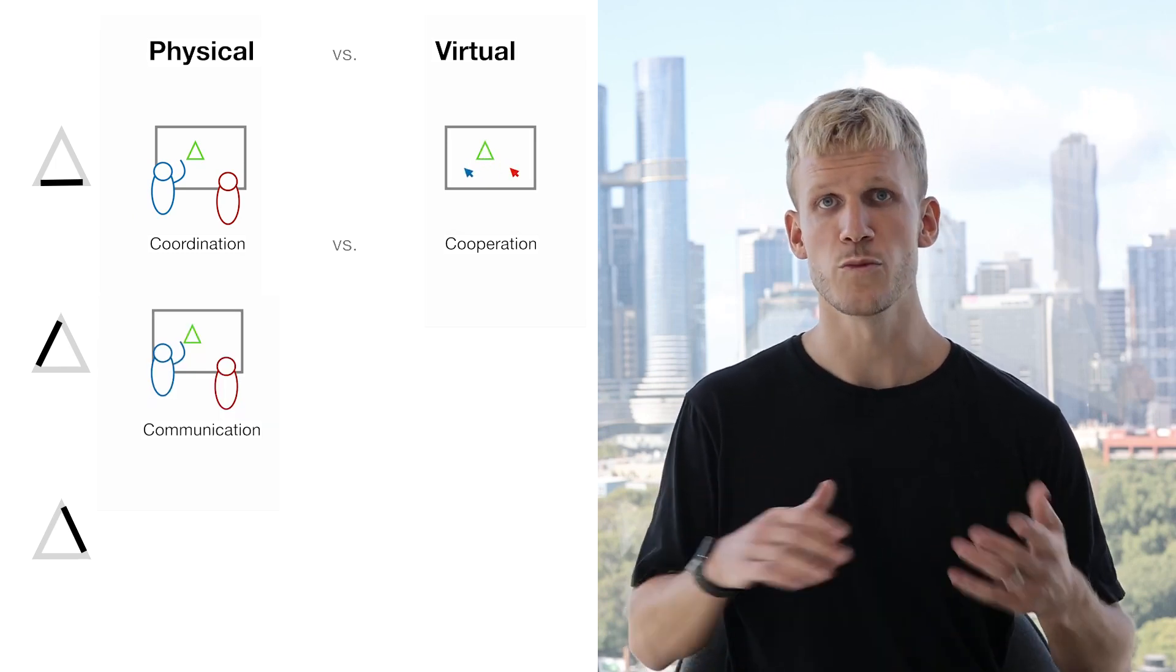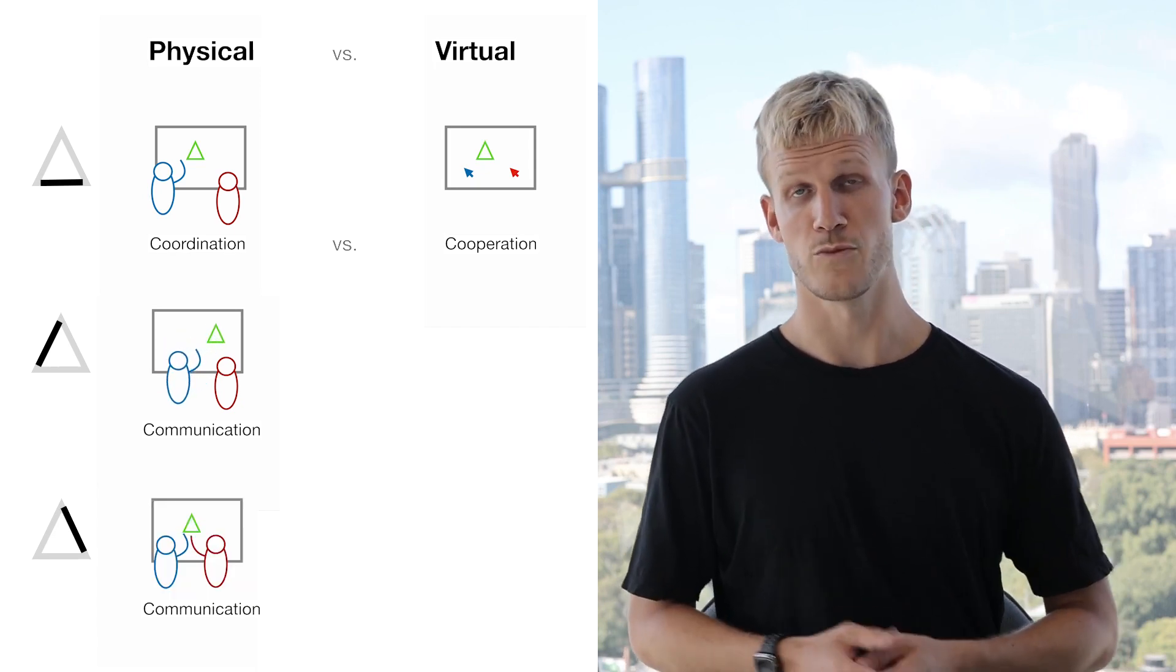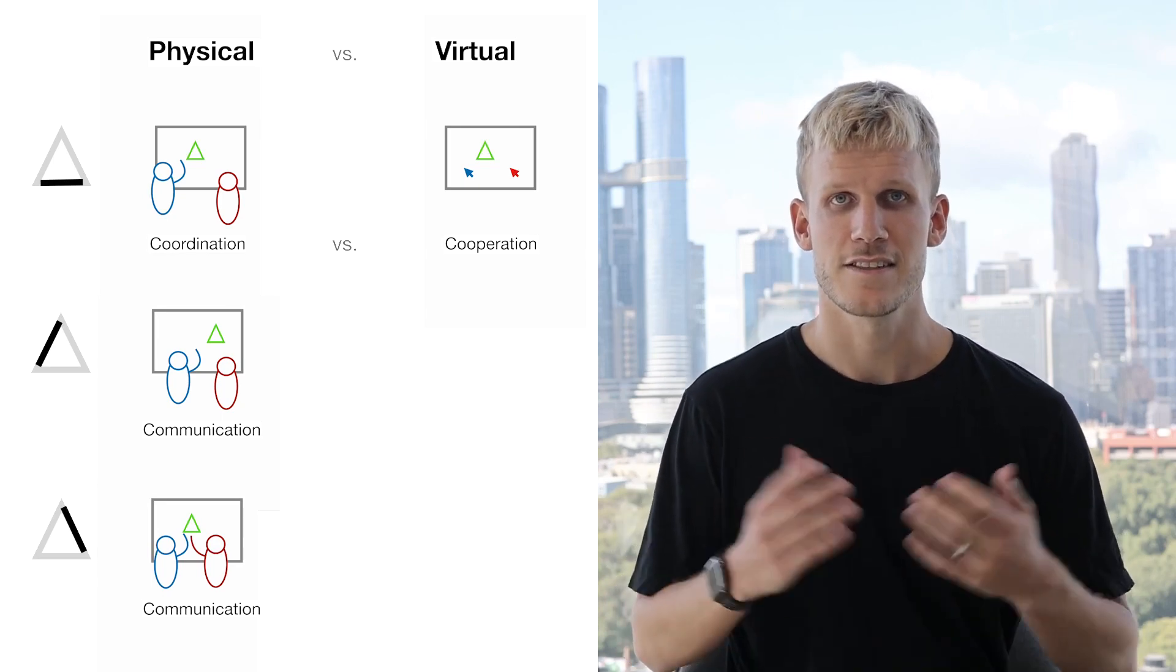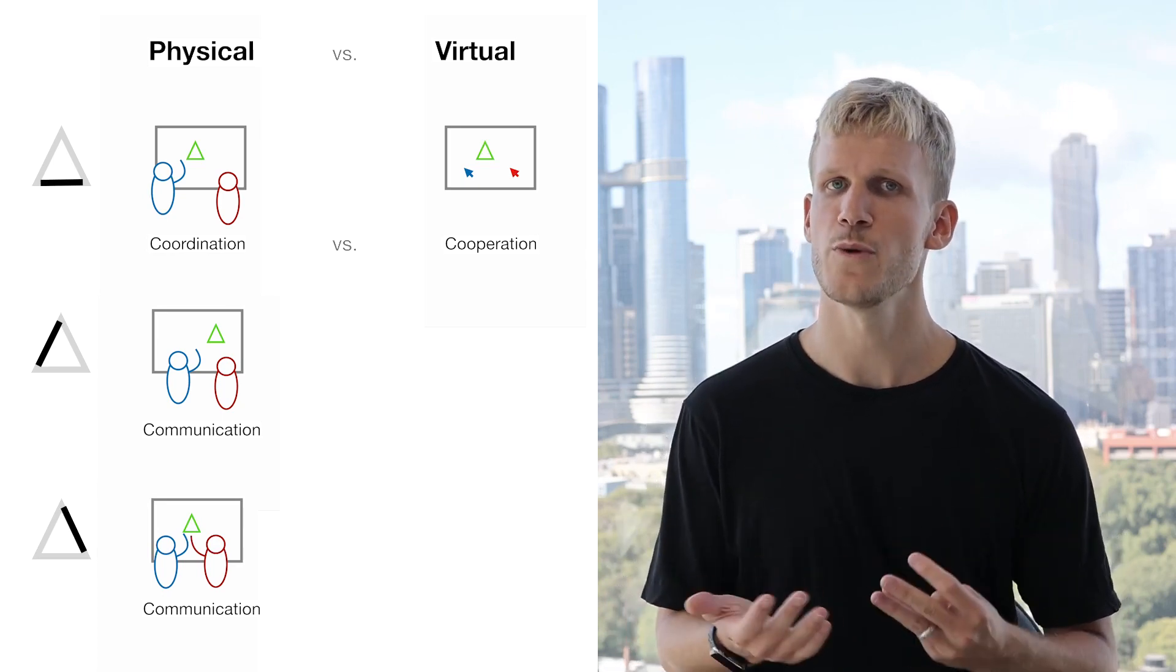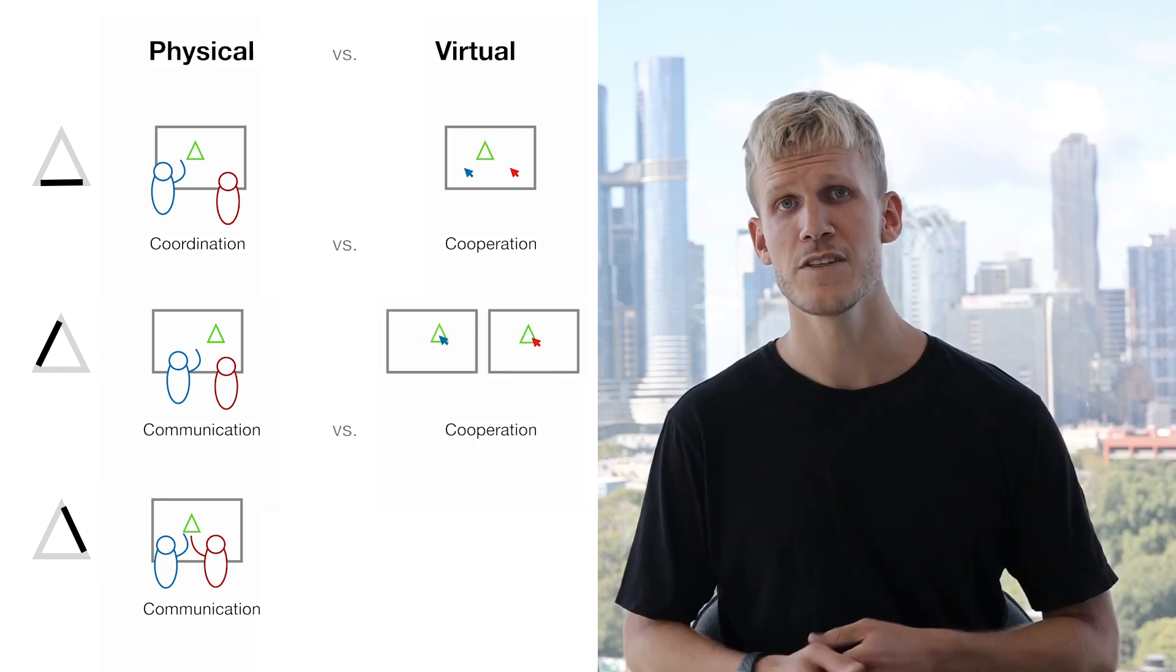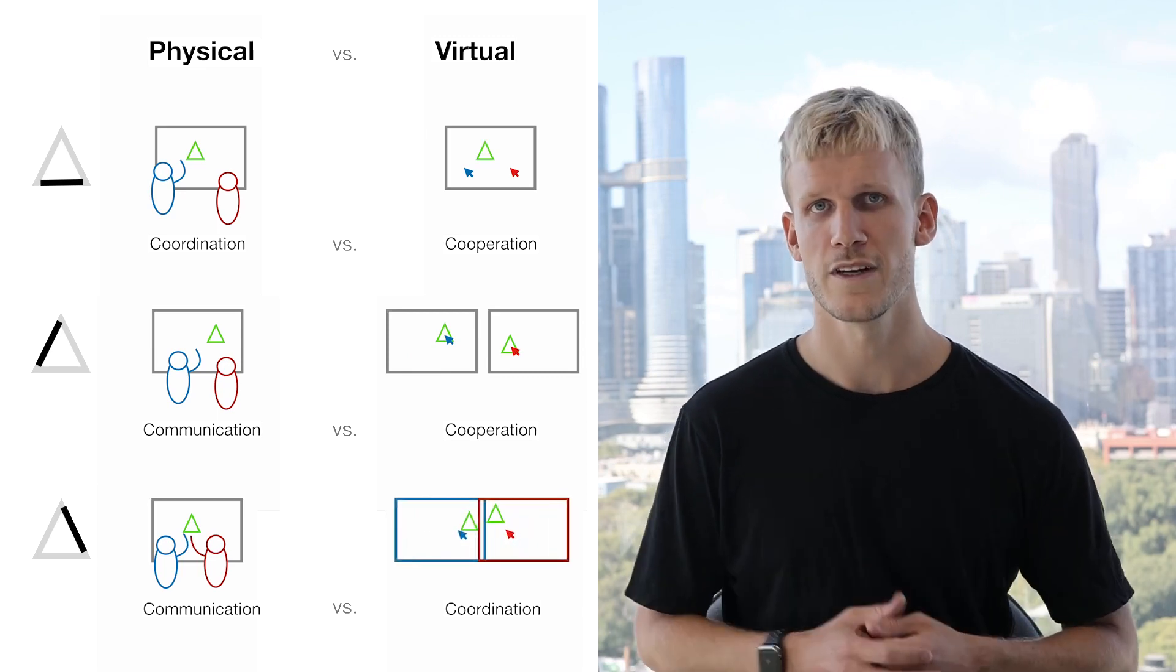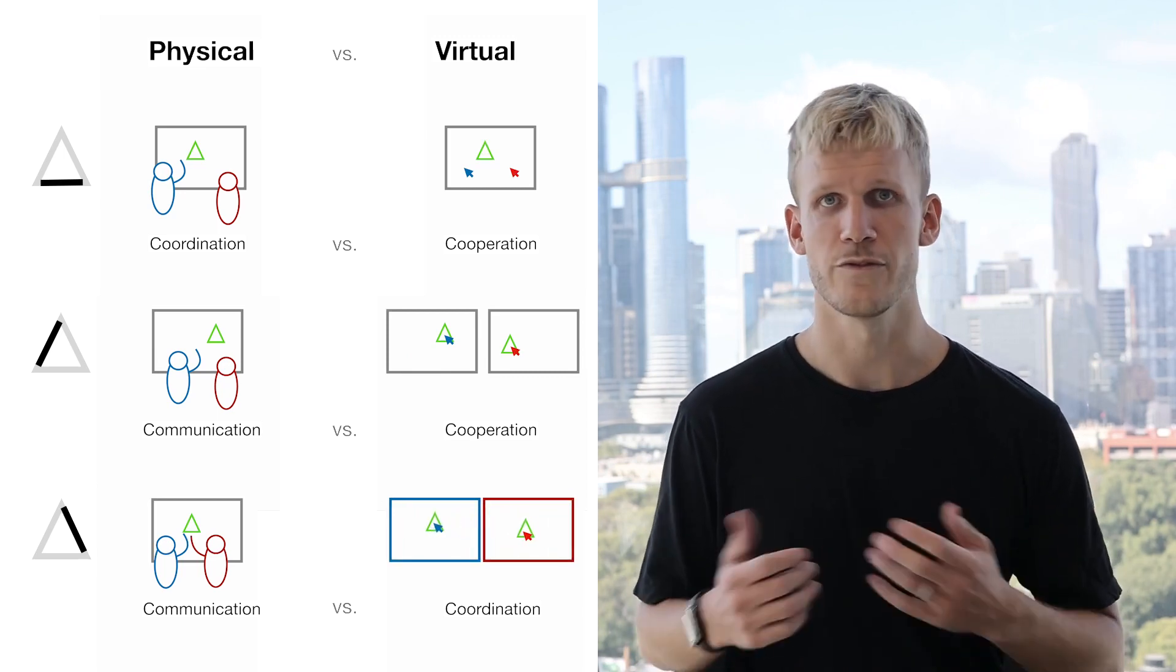In front of a real whiteboard, we can easily monitor the shared attention and use our physical bodies to point and reference content. But that same physical whiteboard can also be too inflexible for splitting up and working individually. With the infinite canvases and individual controls of virtual whiteboards, we can more flexibly coordinate and switch between these different forms of work.